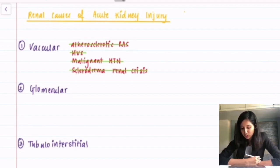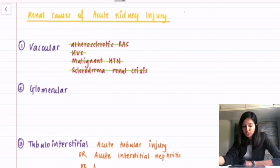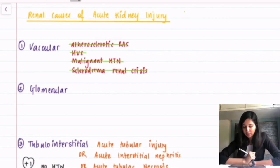Now, we have tubulo-interstitial disturbance which is also called acute tubular injury or acute interstitial nephritis or acute tubular necrosis. Tubulo-interstitial causes usually have protein traced to plus 1 with no hypertension. So, that excludes acute interstitial nephritis.